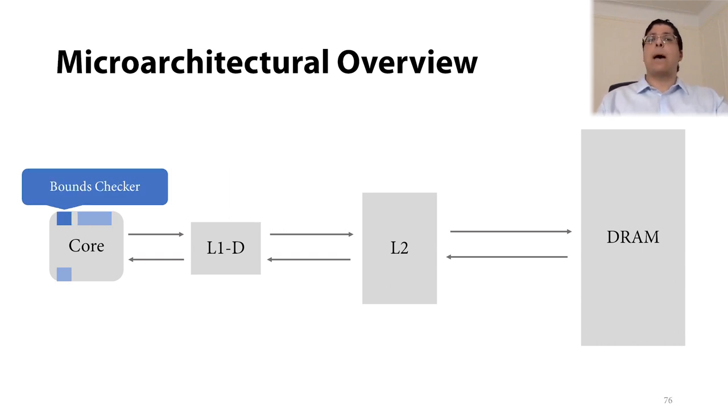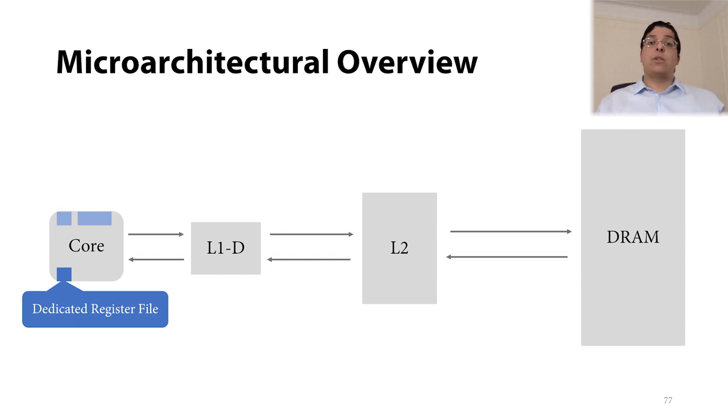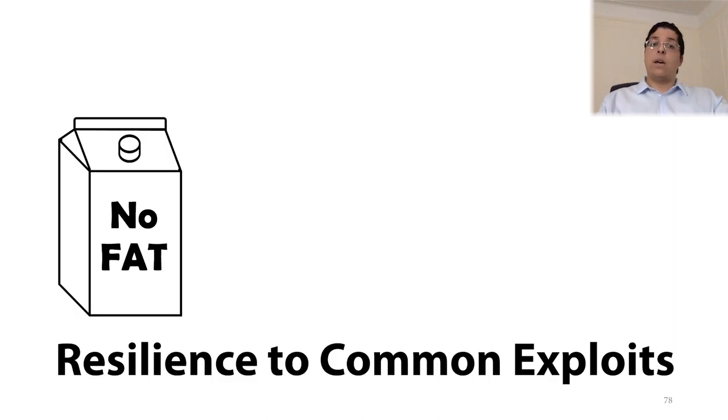Next, NoFat uses a bounds checker to validate all memory accesses as we described earlier in this talk. Finally, NoFat uses a dedicated register file for base addresses to avoid adding any register pressure on the regular register file. Now, as we explained how NoFat is implemented, it is time to evaluate the security benefits in more concrete terms. So, let's look at a handful of common exploits and how NoFat mitigates them.